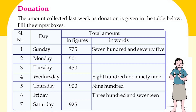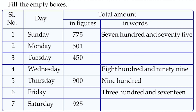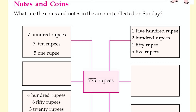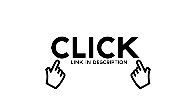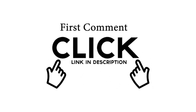Add to the donation. The amount collected last week as donation is given in the table. Fill the empty boxes. The numbers are: 775, 899, 975, 1075, 1175, 1375, 1475, 1575.